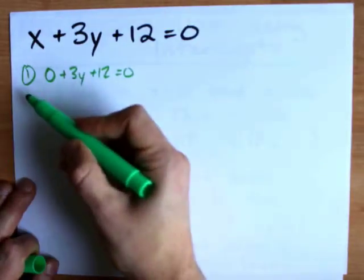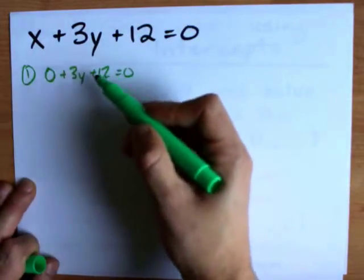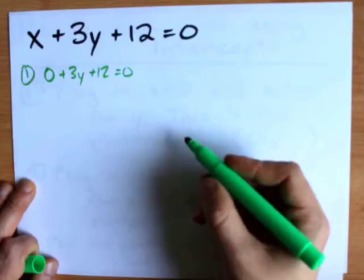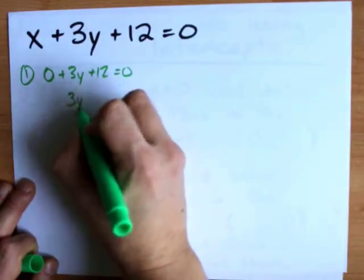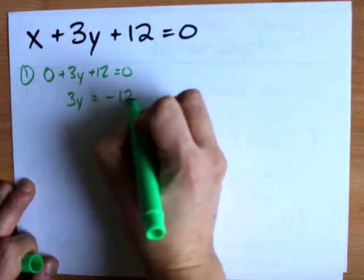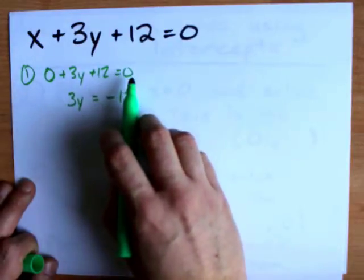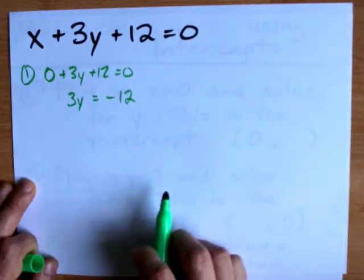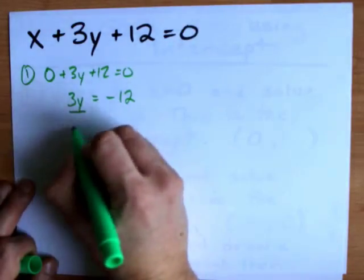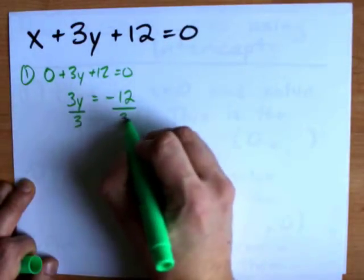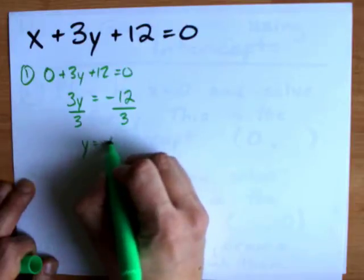I'm going to move all my y's to the left side, which they're already on, and all the numbers to the other side. That leaves me with 3y equals negative 12. Notice that the positive 12 became negative 12 because I had to subtract 12 on both sides to move it there. To isolate for y, I divide both sides by 3, and I end up with y equals negative 4.